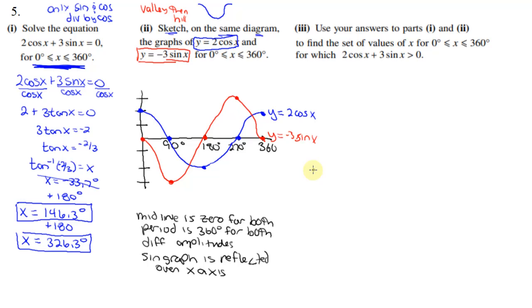Now for part 3 it says use the answers in part 1 and 2 to find a set of x values that 2 cosine plus 3 sine is greater than 0. Now you take a look here. This is y equals negative 3 sine. If I put it like this, subtracting 3 sine on both sides...